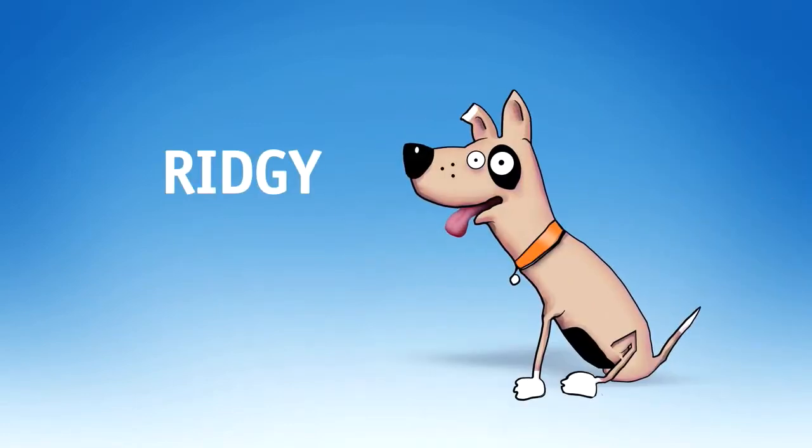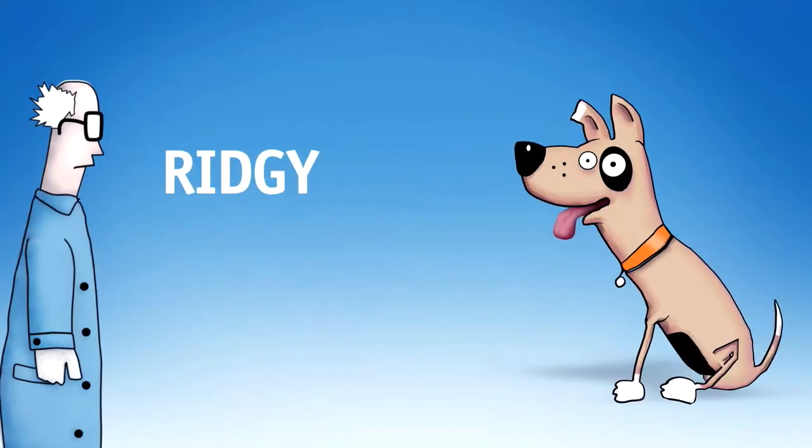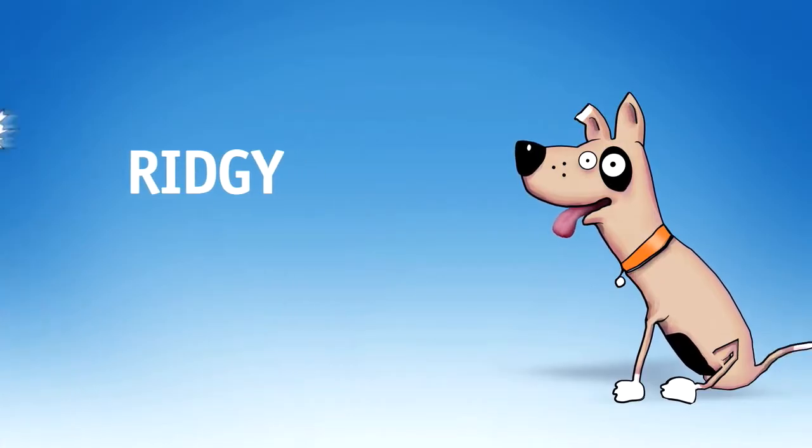This is Ridgey, or as scientists like to call him, the Subtropical Ridge. Ridgey is one of the four major drivers that shapes Victoria's seasonal weather. So let's look at how he does it.